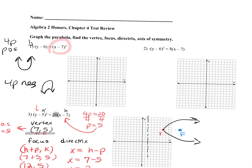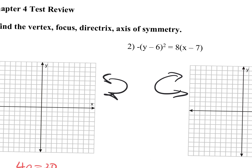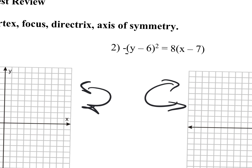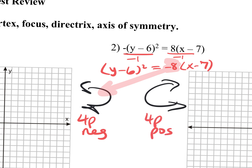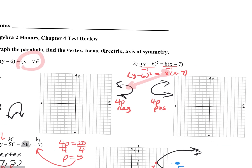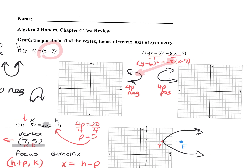If it's a y-squared, we know it's going to be the C or the backward C. On this one, you had to isolate the squared term first by dividing by negative 1, giving y minus 6 squared equals negative 8 times (x minus 7). Since the 4p value is negative, the graph is the backward C. When 4p is negative, it's the backward C for y-squared; when positive, it's the forward C.